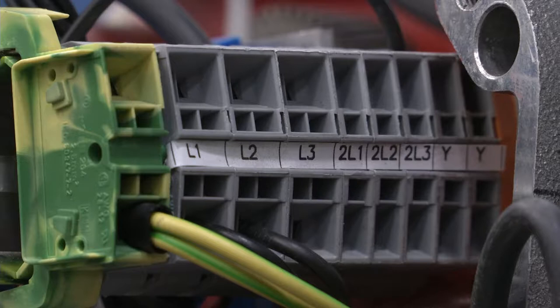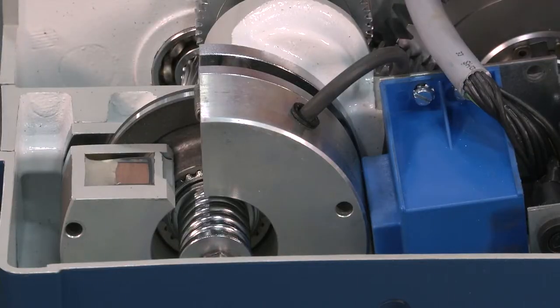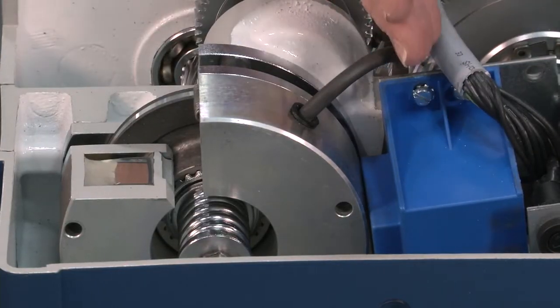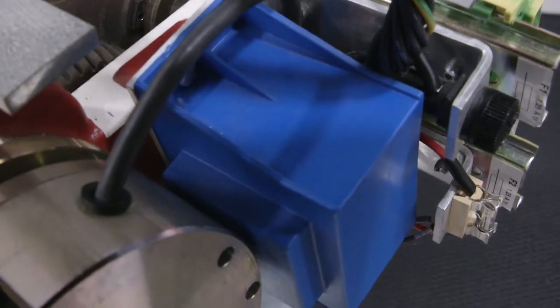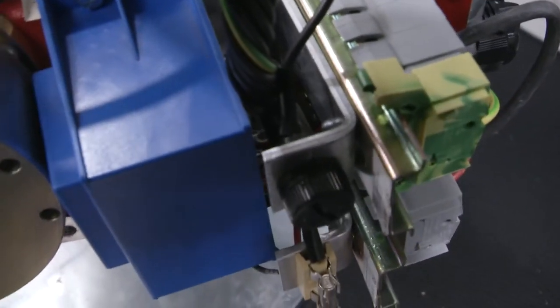To the right of the terminal block is the control transformer. The control transformer feeds power for the control of your contactors, and it's fused on both the primary and the secondary.